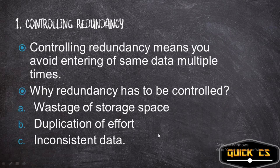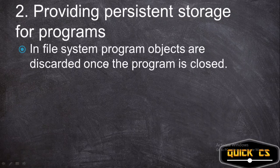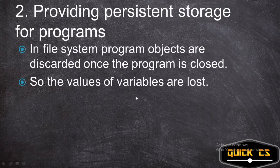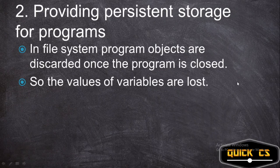The second storage advantage is providing persistent storage for programs. In a file system, once the program is closed, the data structures and program objects are discarded — you lose all the values. When you reopen the program, you don't have those objects unless the programmer explicitly stores the values in separate files, which is very complicated and requires conversion of data structures to file format while terminating, and vice versa when starting.